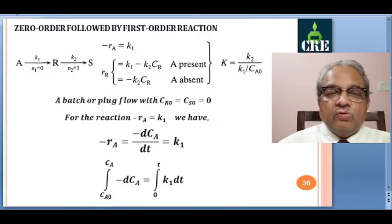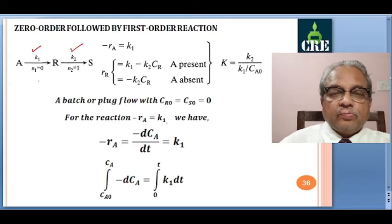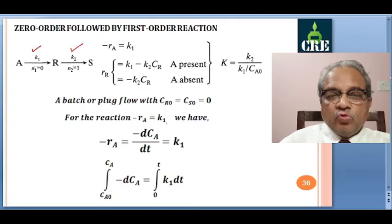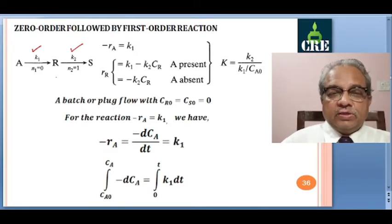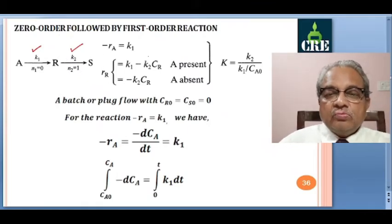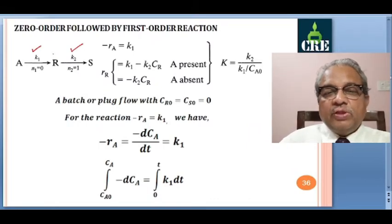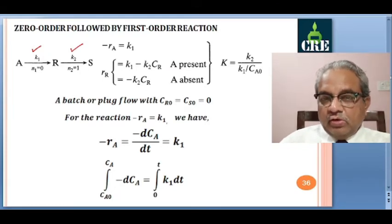Next: zero order followed by first order. The first reaction is zero order and the second is first order. For zero order, the situation is different — you must carry out the reaction up to some limiting value, beyond which you would get negative concentration. We have two different situations. For the first reaction: −rA = K1 (zero order). Rate of formation of R when A is present: K1 − K2·CR. After A is exhausted: simply −K2·CR.